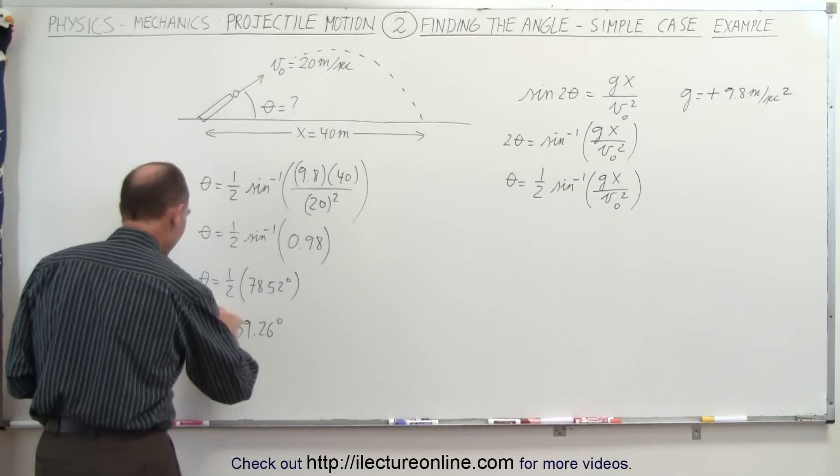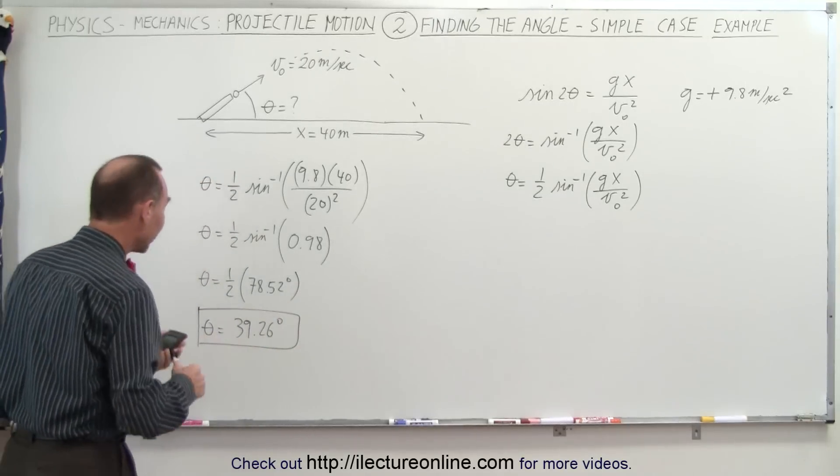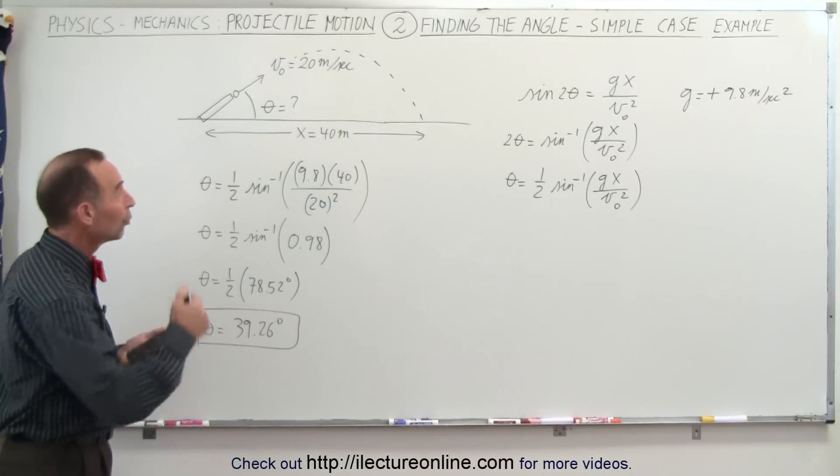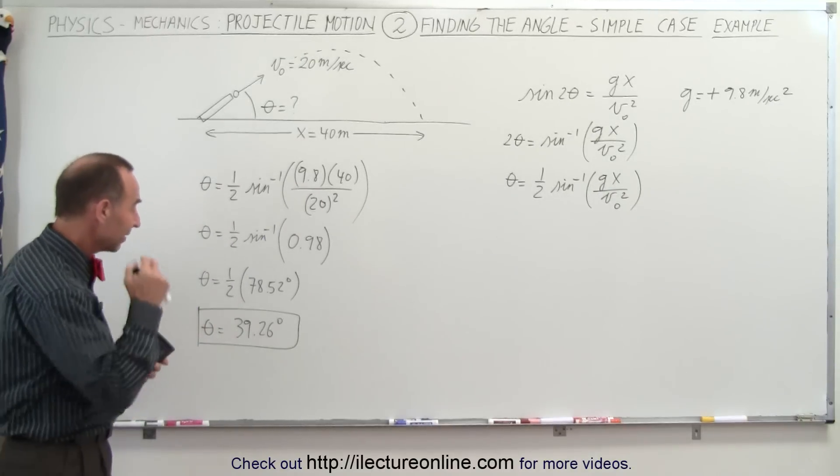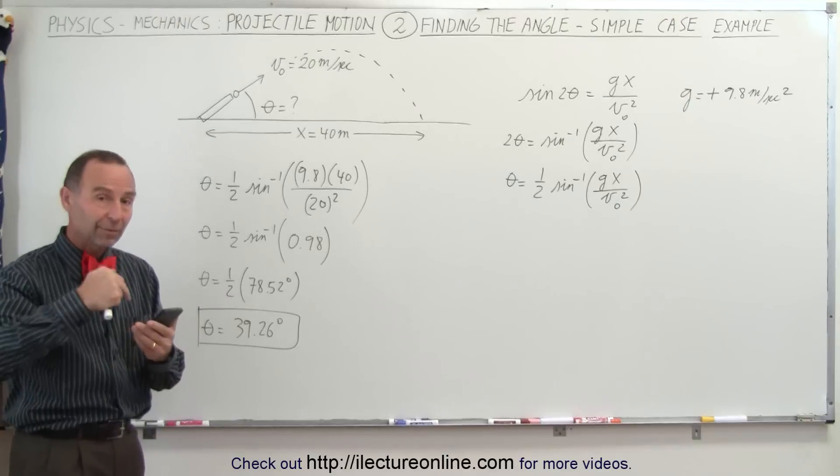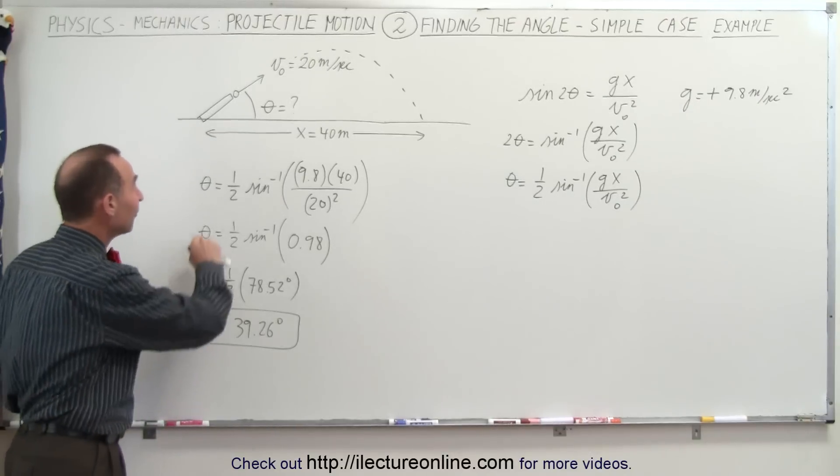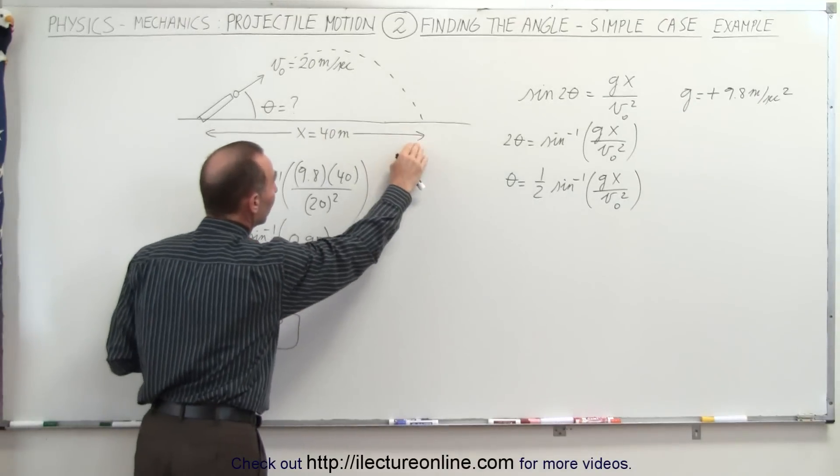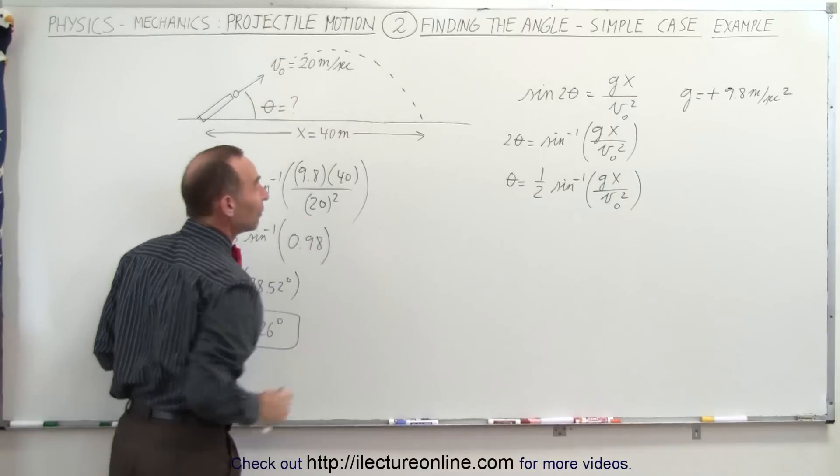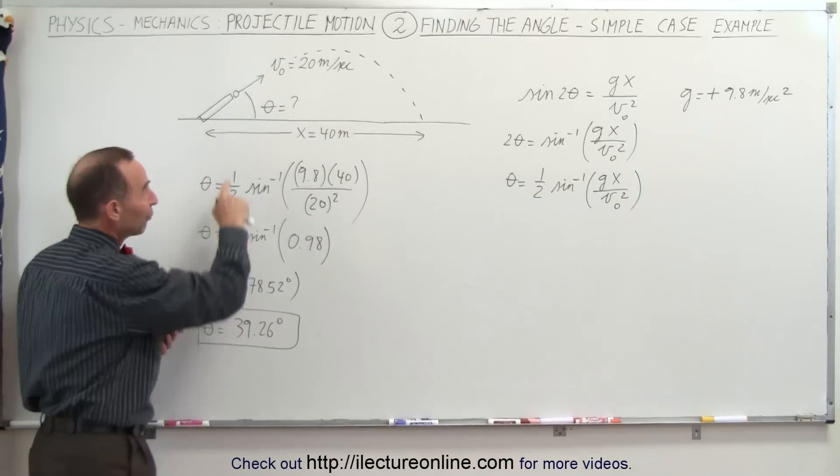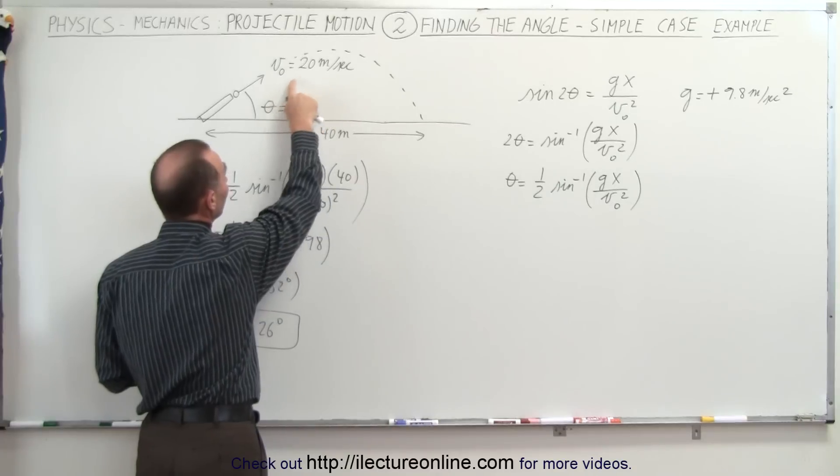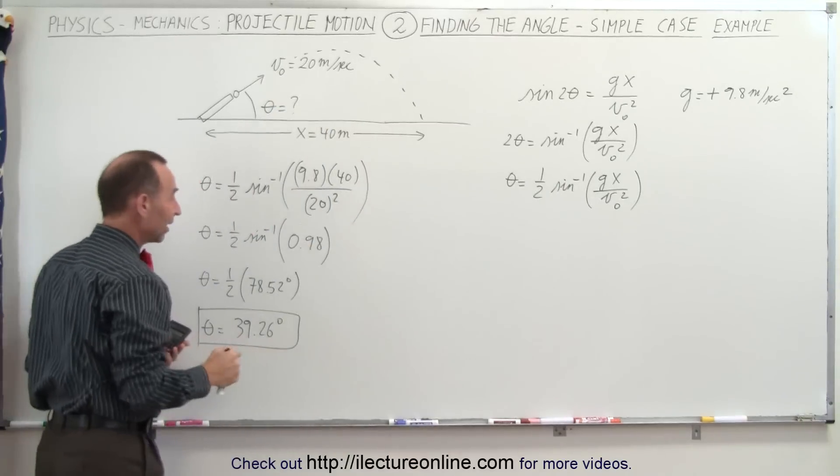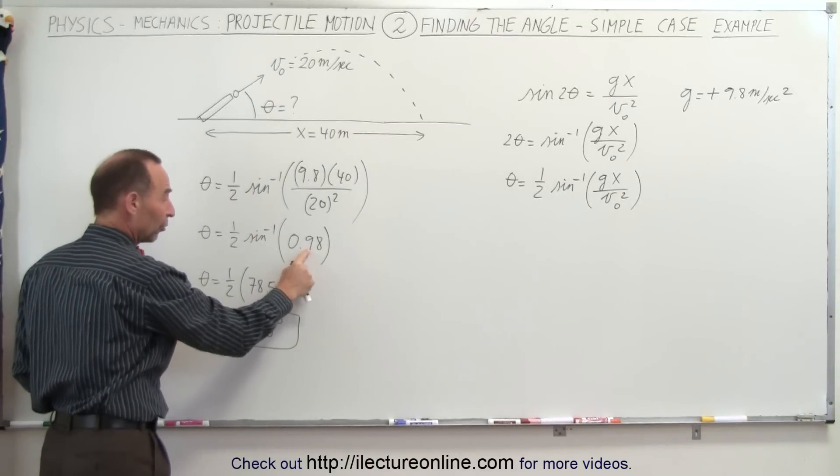And that is the angle required for that projectile in order to reach a distance of 40 meters. Now, when you think about it, it makes a lot of sense, because we have already learned in previous videos that the farthest a projectile can go is when it has an angle of 45 degrees. Notice that 40 meters is close to its ultimate distance a projectile can reach when it starts at 20 meters per second. That's why this number was so close to 1.